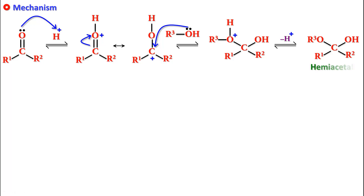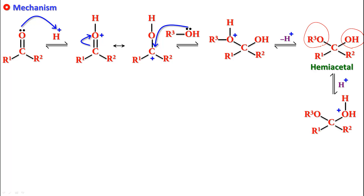This intermediate loses a proton and we get a product with one OH on the carbon and one ether group — we call this a hemiacetal. The hemiacetal doesn't stop there; it goes on further since we have two moles of alcohol. In the next step, H+ is picked up again. If the ether oxygen picks it up, the reaction goes back because it's reversible. But if the OH oxygen picks it up, water is released and we get a carbocation.